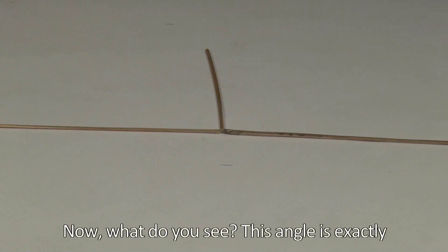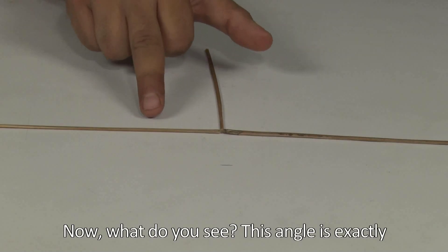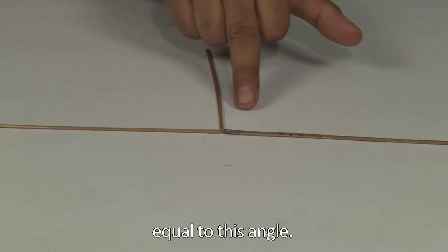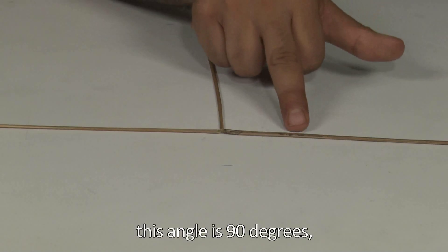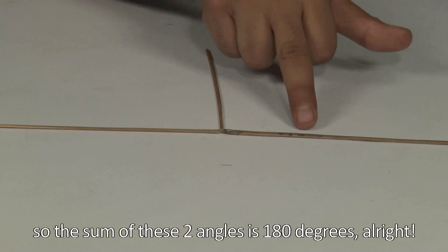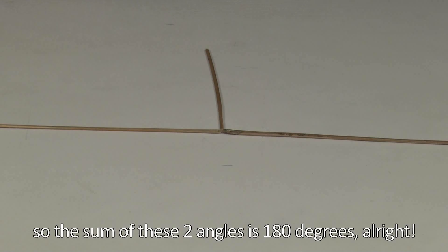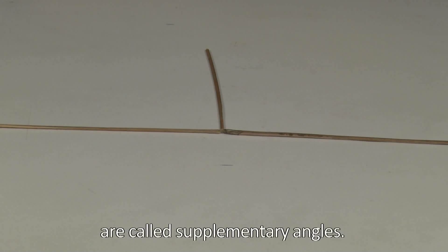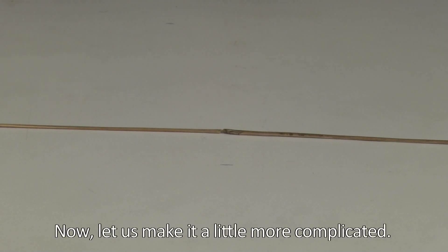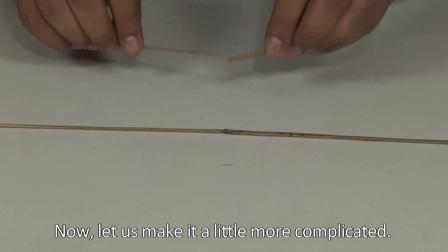is line B. So what do you see? This angle is exactly equal to this angle. This angle is 90 degrees, this angle is 90 degrees, so the sum of these two angles is 180 degrees. Two angles whose sum is 180 degrees are called supplementary angles. Now let's make it a little more complicated. Instead